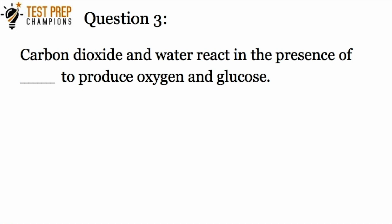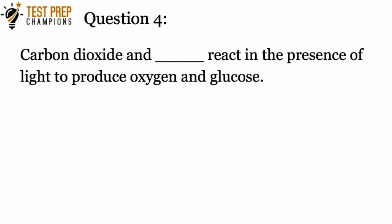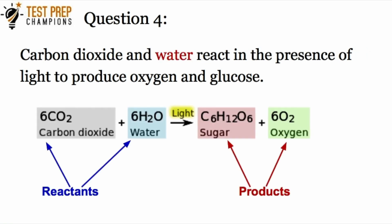Question three: carbon dioxide and water react in the presence of blank to produce oxygen and glucose. The answer is light. Question four: carbon dioxide and blank react in the presence of light to produce oxygen and glucose. The answer is water. Carbon dioxide and water react in the presence of light to produce oxygen and glucose — you really can't hear that enough times before your test.